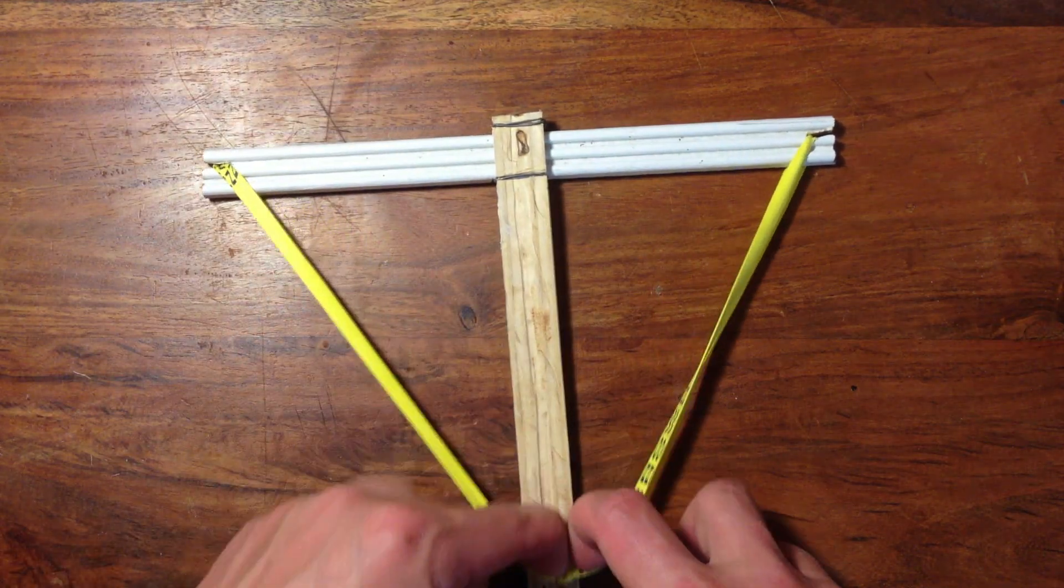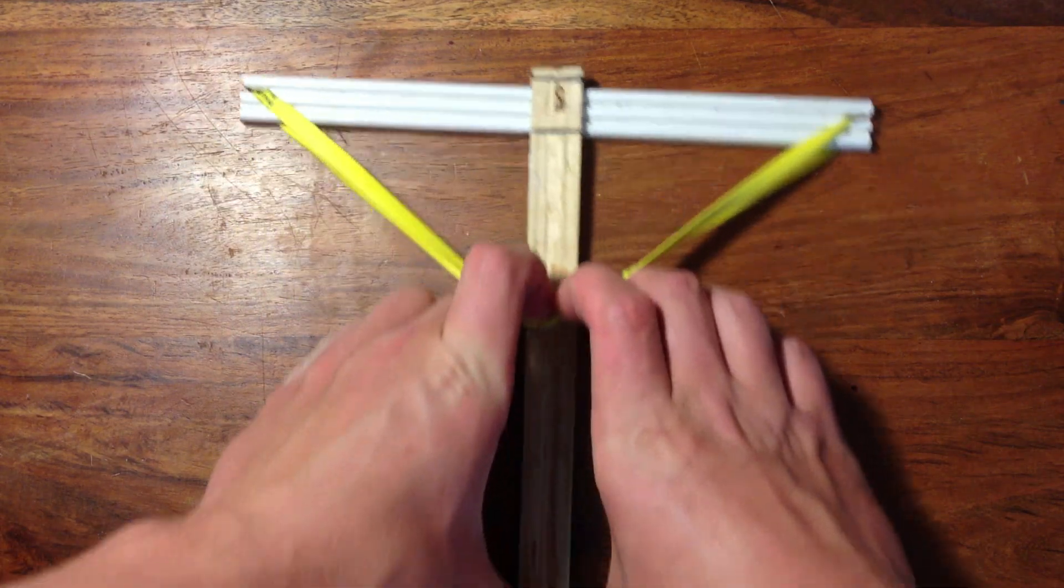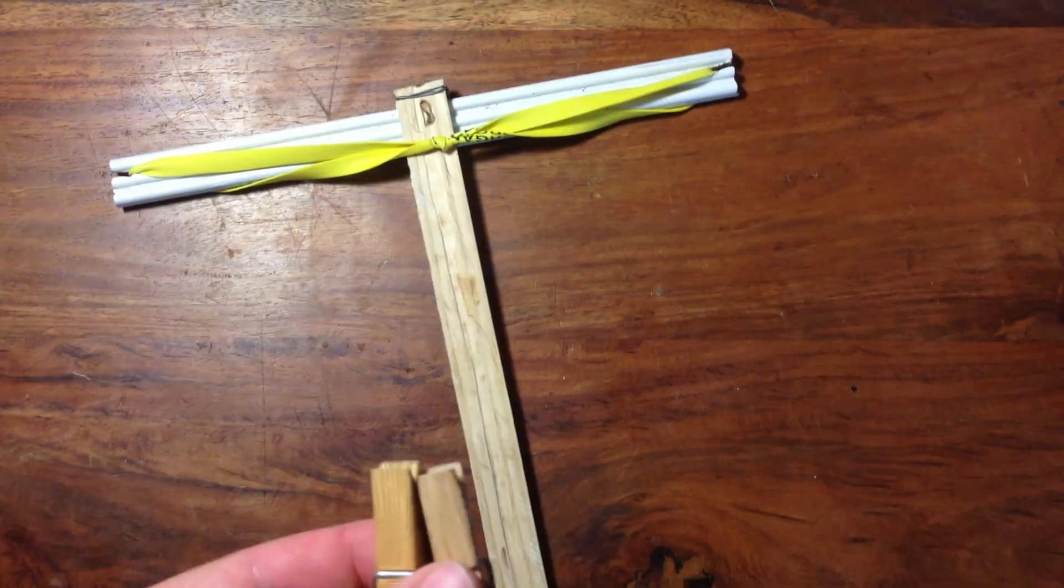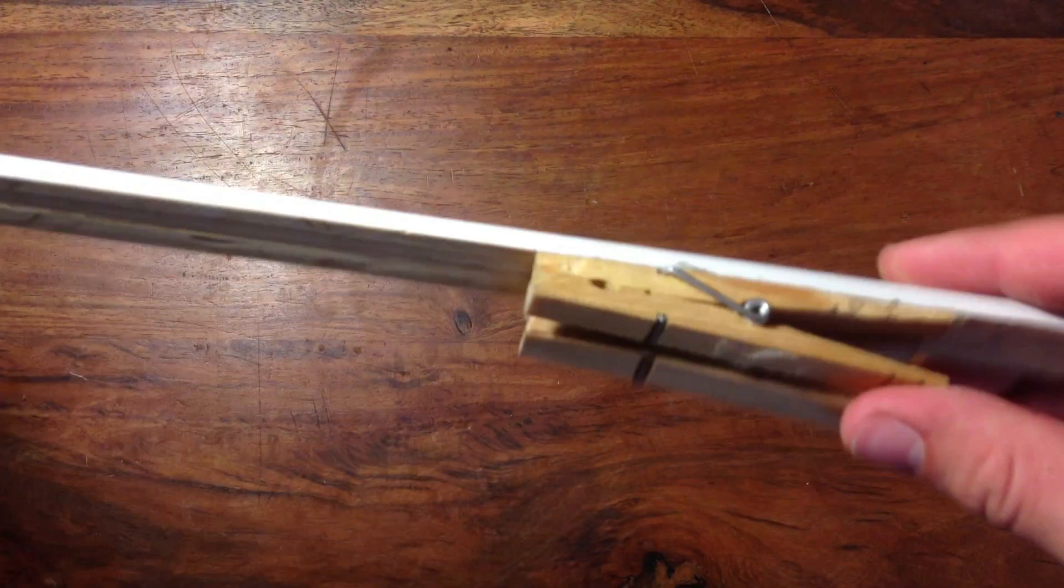Then stretch the rubber band down about 85% of its full stretch and make a mark. Now take two clothespins and glue them down where you made the mark.